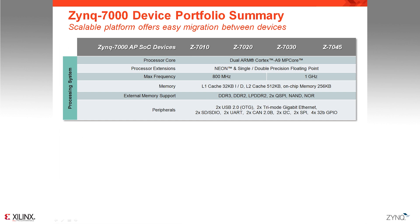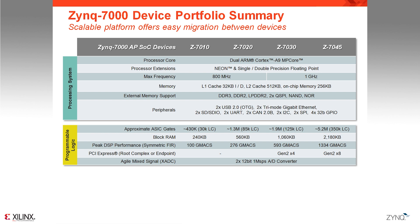Let's take a look at the family table. One important point is that all devices in the Zynq 7000 family share the exact same processing system — the same processor, memory controller, peripherals, and interface to the programmable logic. The intention was to offer a common base platform that allows designers to easily migrate their application from one device to another, benefiting from the scalability of the Zynq 7000 family. What differentiates the devices is the programmable logic, which scales to accommodate more or less customization depending on the target application.